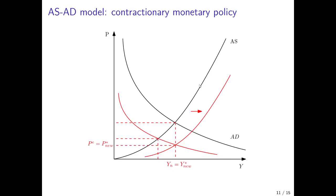What happens to the AS curve is exactly the opposite of the previous example. Actual prices are below price expectations, which wage negotiators and labor unions observe. Therefore they adjust their price expectations downwards and demand lower wages, which means the AS curve shifts to the right. Output and income increase from the short run equilibrium toward the medium run equilibrium, where actual output equals natural output. Price expectations and the actual price level are now lower than in the previous equilibrium, achieving a disinflationary situation.